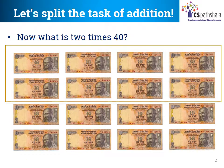Class, let's repeat what we did before. Let's add two sets of Rs. 40 each. What is 40 plus 40? That's right! It is 80. Therefore, you have added the first 8 notes to Rs. 80.